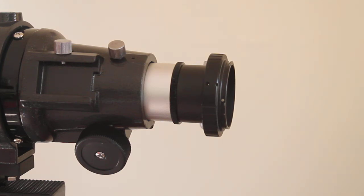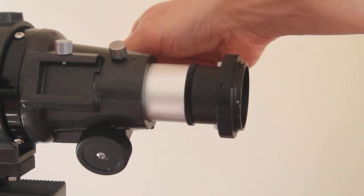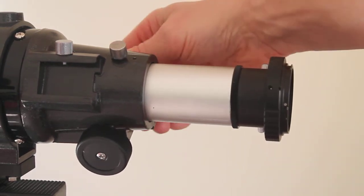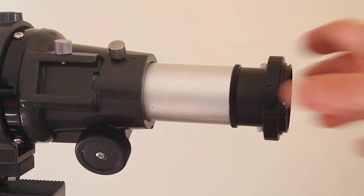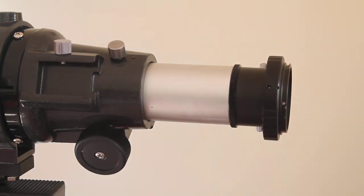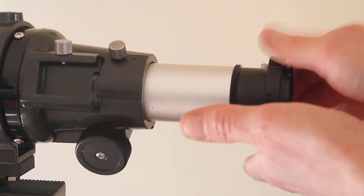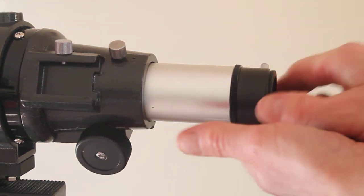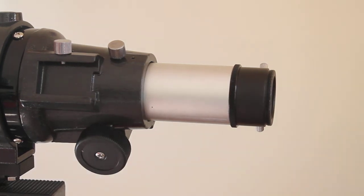Another thing many people find is that with some cameras, no matter how far you take it out, there's simply not enough outward focus to get infinity focus. There is a way around that. Take your T-ring off, then you can get T2 extensions.